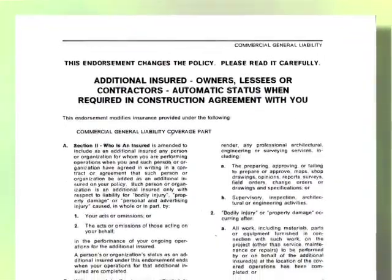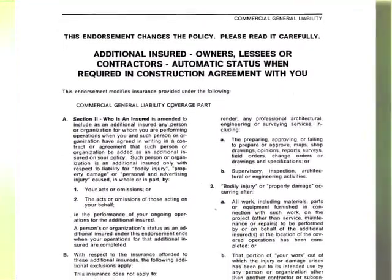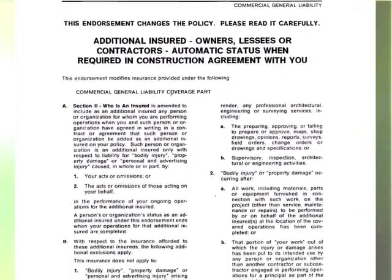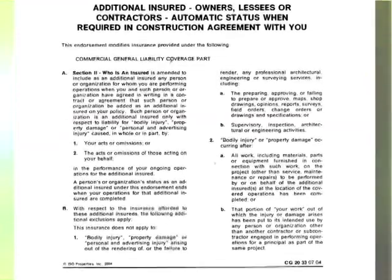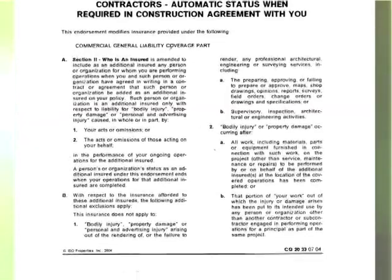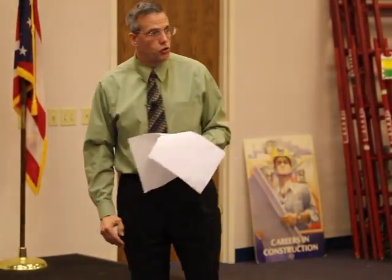If you go into the packet provided, you'll see an endorsement called the additional insured — owners, lessees, contractors — automatic status when required in a construction agreement with you. There is no oral contract here. There is no purchase order without a requirement that they name you as an additional insured. You have got to have an actual subcontract agreement, or at least an agreement, requiring that they name you as an additional insured.